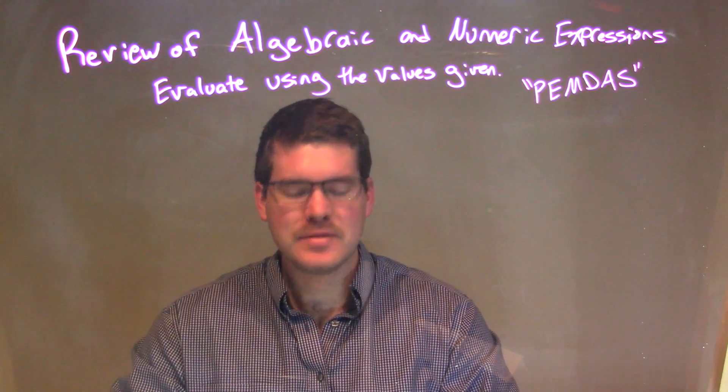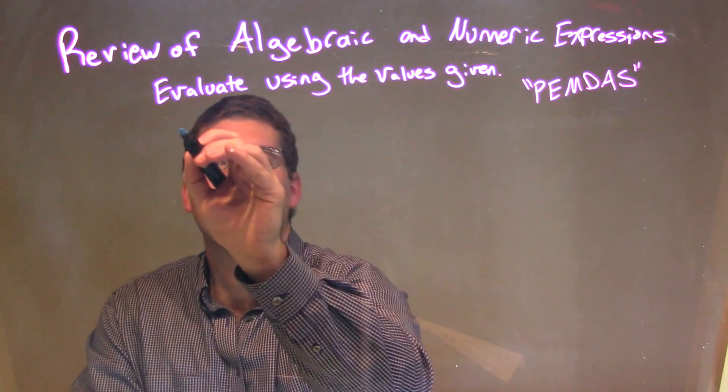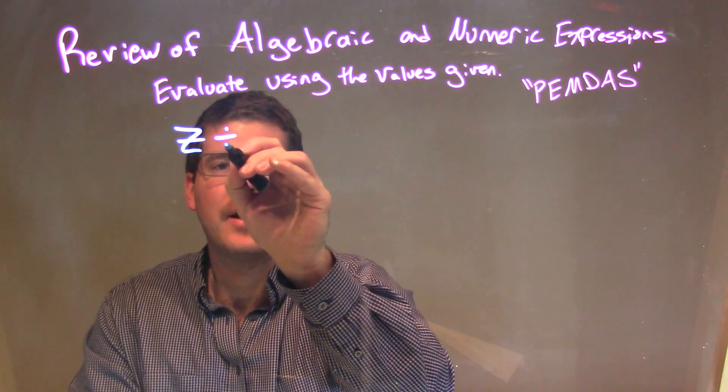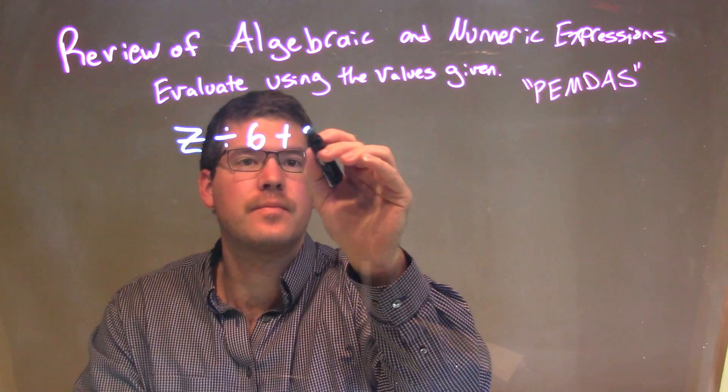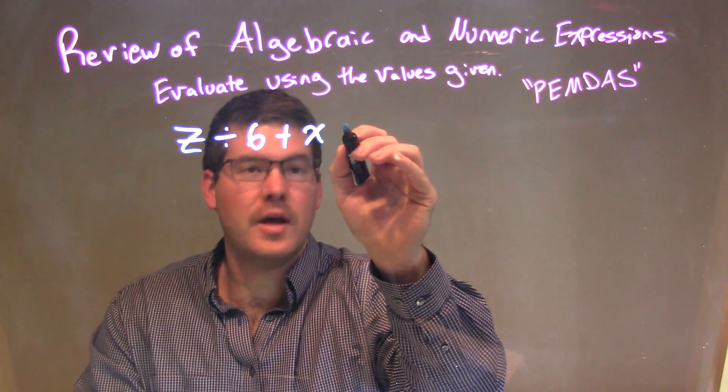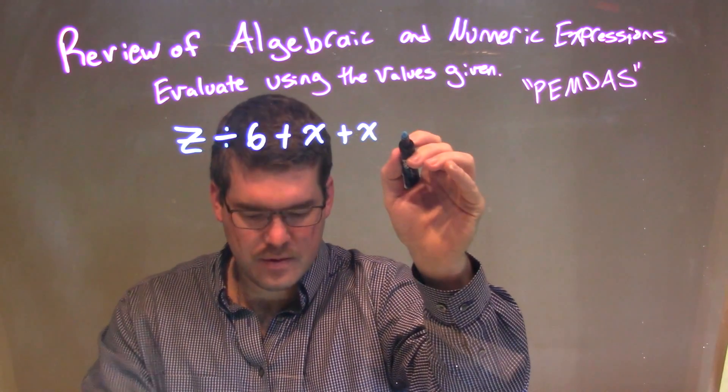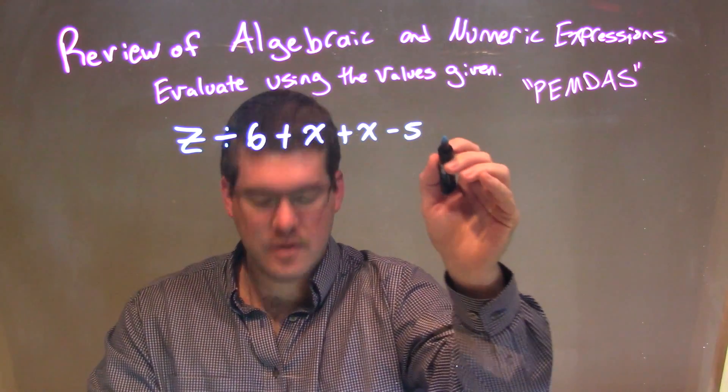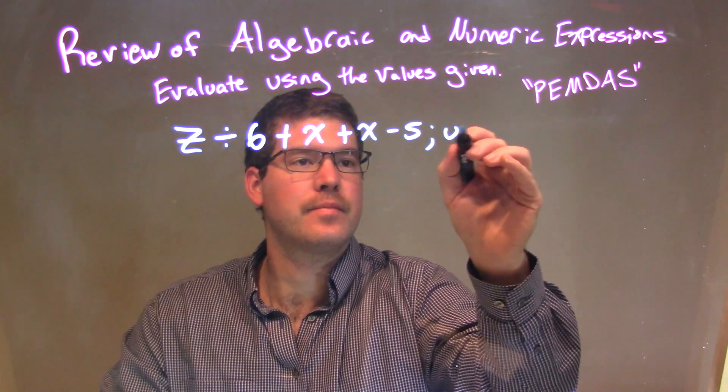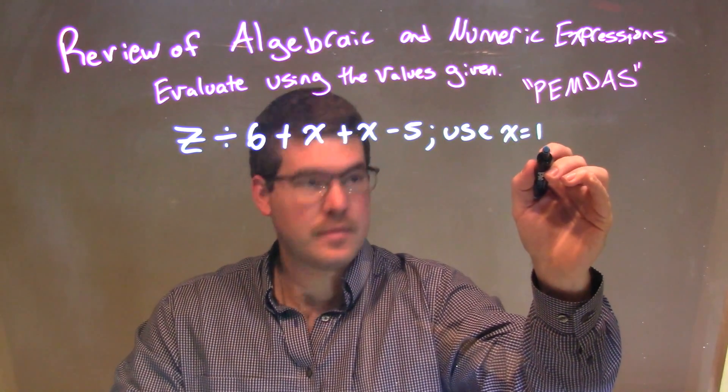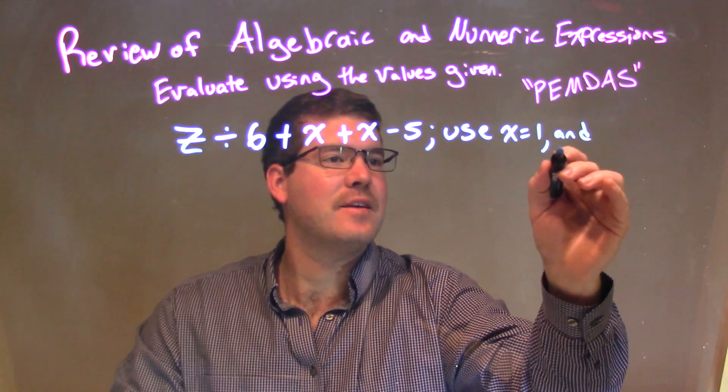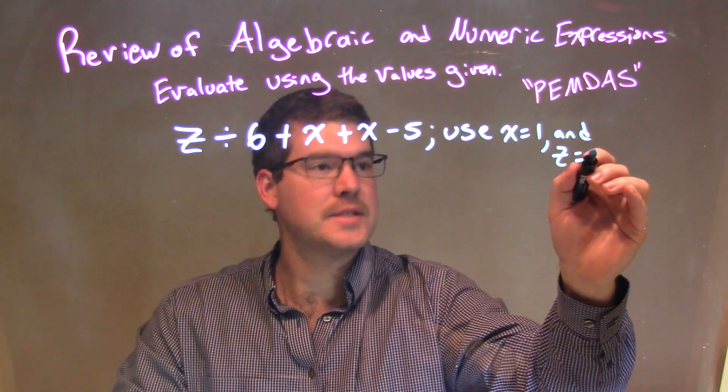So if I was given this expression z divided by 6 plus x plus x minus 5, we're using x to equal 1 and z to equal 6.